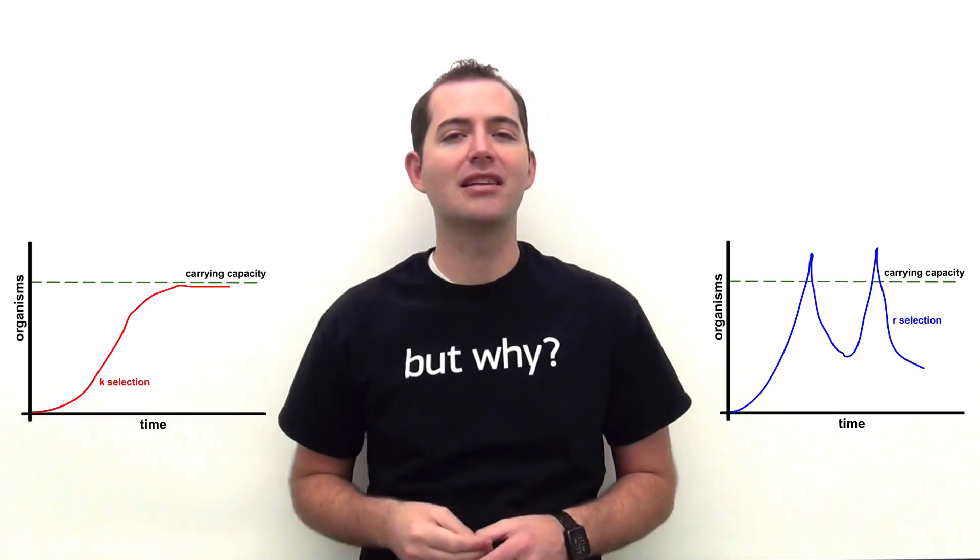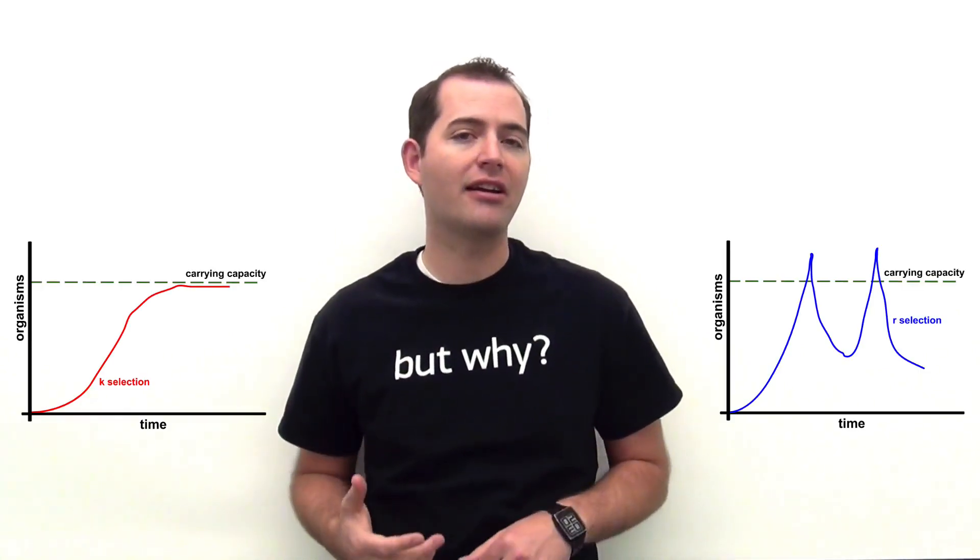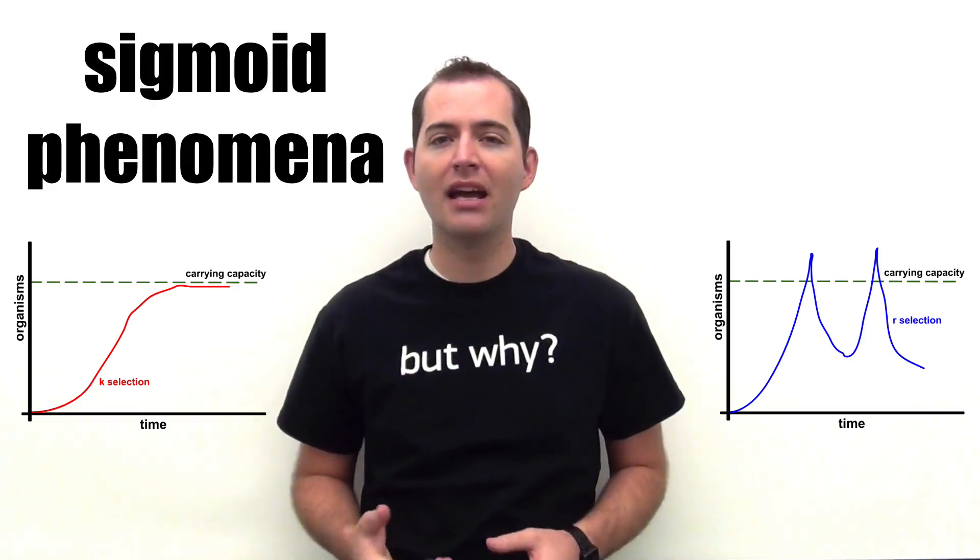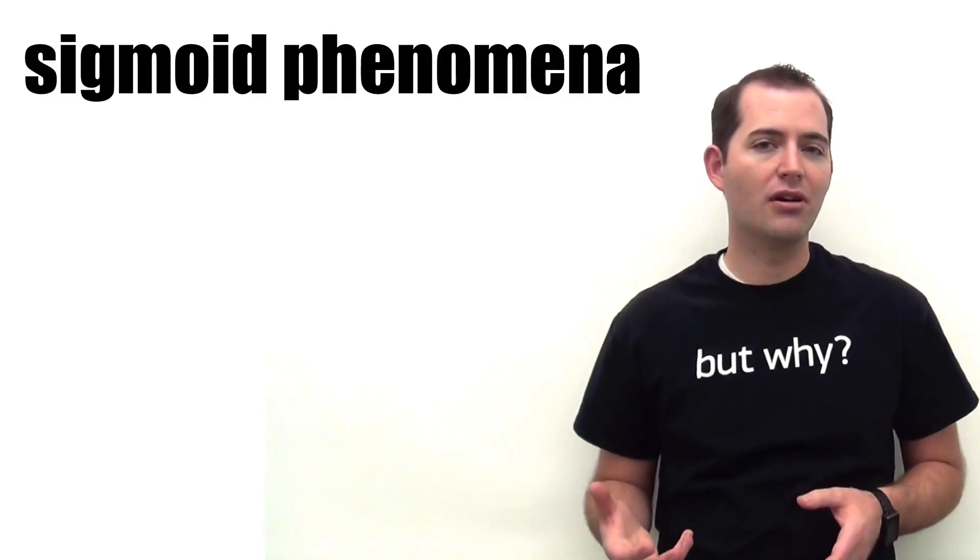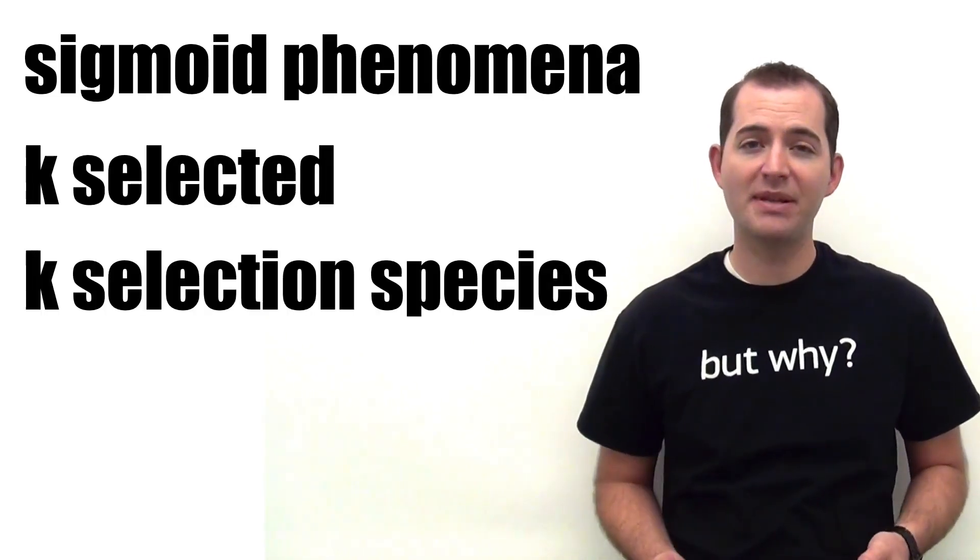Two common ways or patterns that populations below their carrying capacity grow to reach that carrying capacity are known as the sigmoid phenomenon and the peak phenomenon. Sigmoid growth is also known as K-selected or K-selection species.